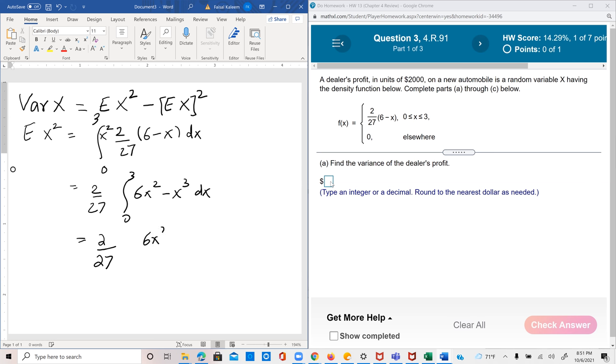So this is 6x cubed over 3 minus x to the 4 by 4, from 0 to 3.